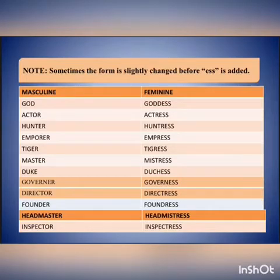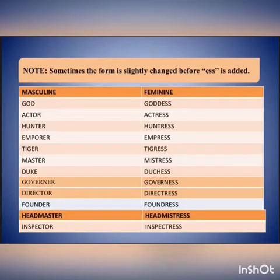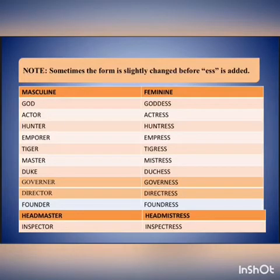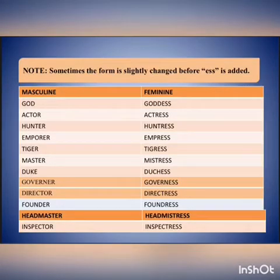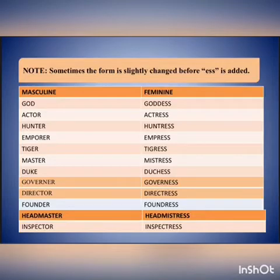Here we make some slight changes — notice the spellings that change. 'God' is a masculine gender; when we change it to the feminine gender, 'god' remains the same but we add one more 'd' and then put -ess at the end, giving 'goddess'. Similarly, in 'actor' we remove the 'o' and make it A-C-T-R-E-S-S — actress.